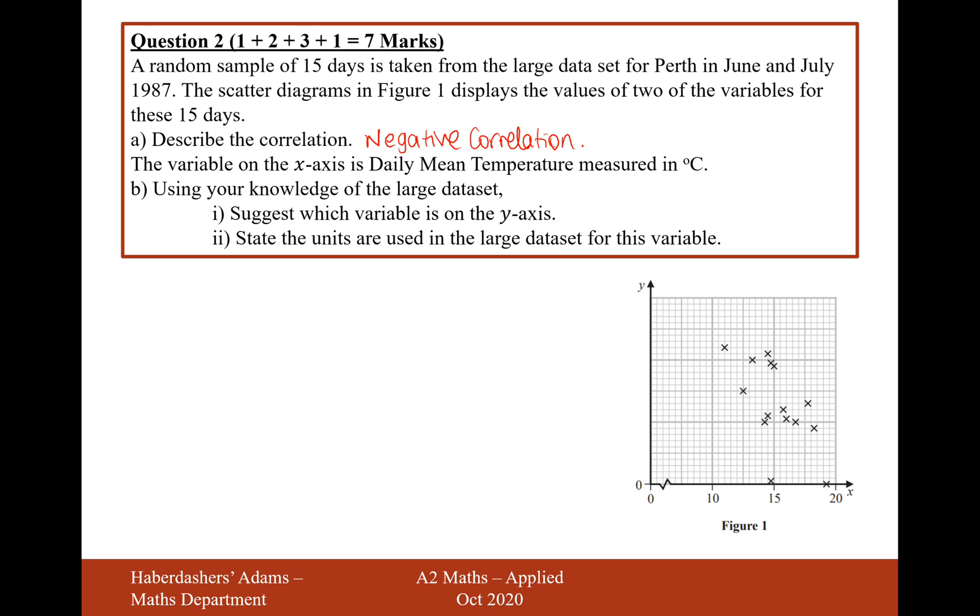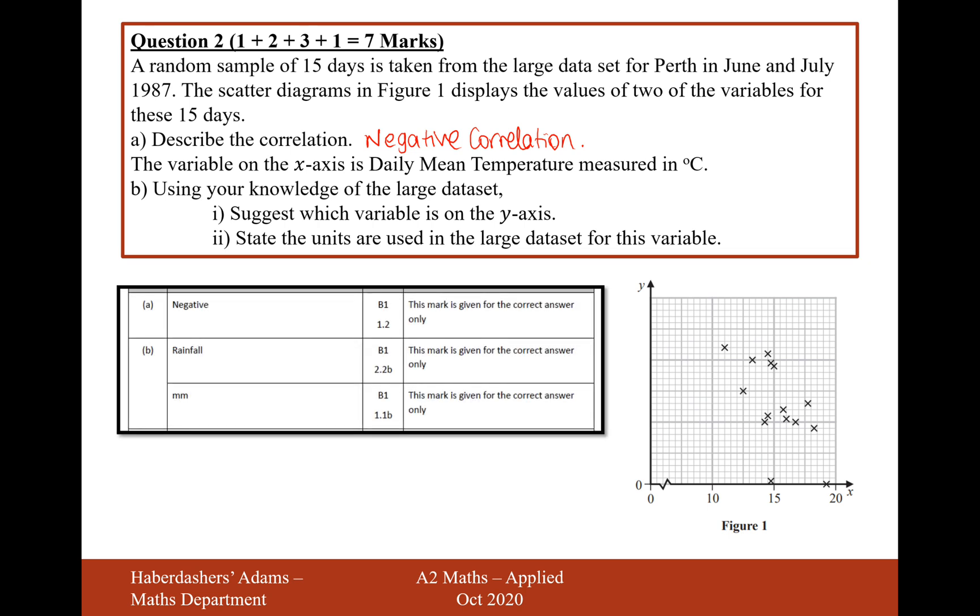And remember that the Perth data set is the reduced data set, where we only have a set number of variables. The variable that we do have, however, is rainfall. So rainfall is the answer to B part i, and rainfall is measured in millimetres, where there is potential for you to have zero millimetres of rain, or a very small amount of millimetres of rain in one day. So the answer there is rainfall measured in millimetres.